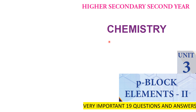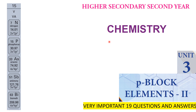Before discussing the questions and answers, we want to see some very important hints. That is the nitrogen group. The nitrogen group general electronic configuration is NS2 NP3. Nitrogen: 2S2 2P3, Phosphorus: 3S2 3P3, Arsenic: 4S2 4P3, Antimony: 5S2 5P3, Bismuth: 6S2 6P3.